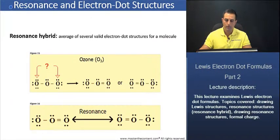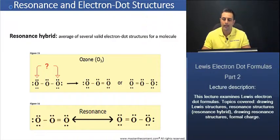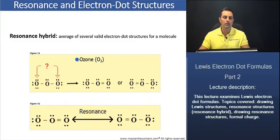We'll shift our focus now to resonance and electron dot structures. If we take a look here at figure 15 for ozone, if we follow the steps that we had just outlined in the previous slide, then we would end up with the following molecule for ozone just before we reach step 5.